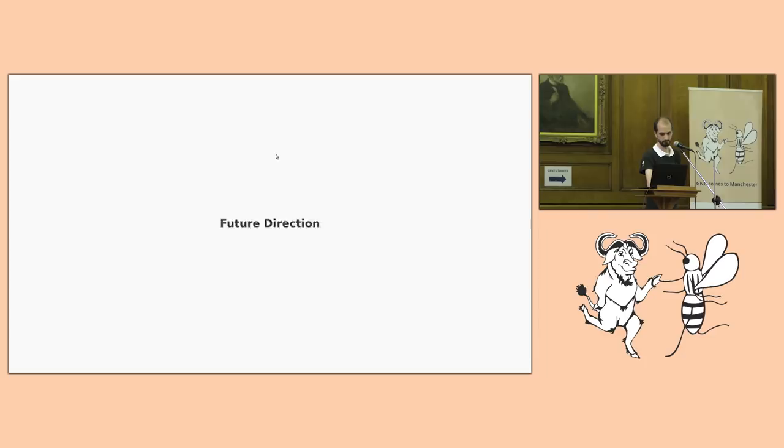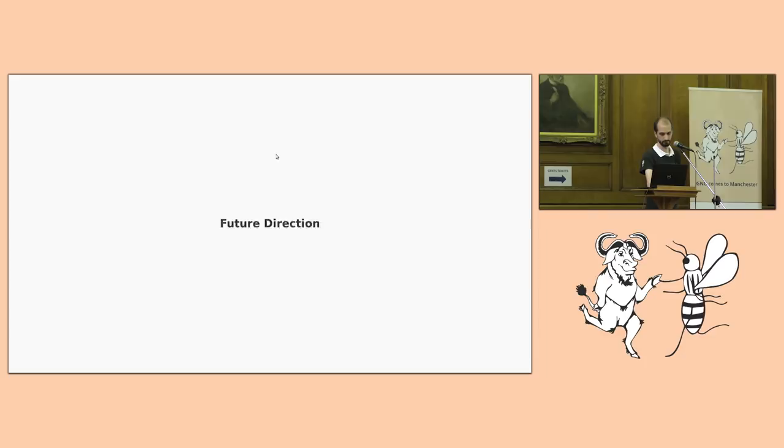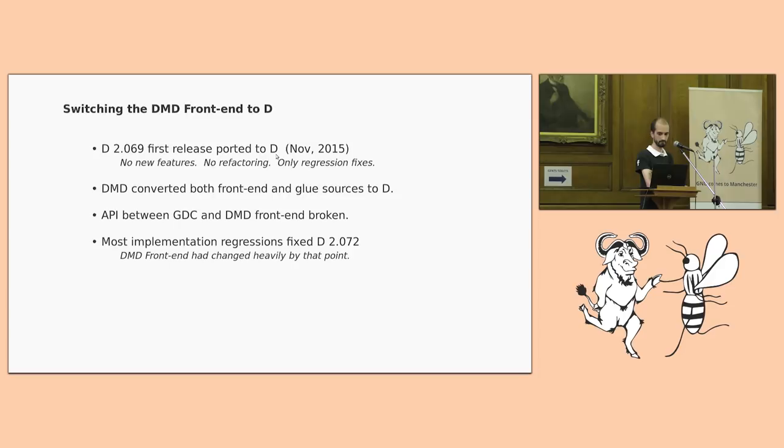So, what do I want to do for the immediate future? For the time being, I want to focus most of my effort into finishing the transition from the front-end implementation from C++ to D. The DMD front-end itself was initially ported to D in version 2.069. However, the DMD compiler converted both their front-end and their code generator, meaning that nobody actually tested whether the combination of a D front-end and a C++ codegen worked. Spoilers, it didn't. So, some of the more glaring implementation regressions included the dropping of floating-point emulation. They sort of replaced all the floating-point emulation with native long double.